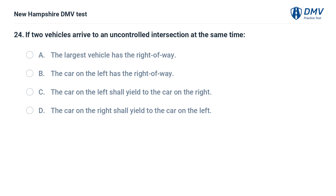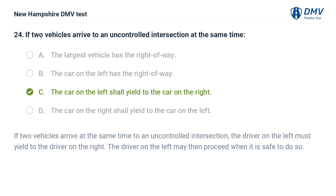If two vehicles arrive at an uncontrolled intersection at the same time: A) the largest vehicle has the right of way, B) the car on the left has the right of way, C) the car on the left shall yield to the car on the right, D) the car on the right shall yield to the car on the left. The answer is C. If two vehicles arrive at the same time at an uncontrolled intersection, the driver on the left must yield to the driver on the right. The driver on the left may then proceed when it is safe to do so.